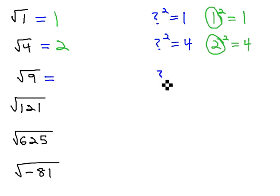Similarly, with the square root of 9, we want to know what number squared is 9, and we know that number has to be 3 squared to give us 9. So the square root of 9 is equal to 3.